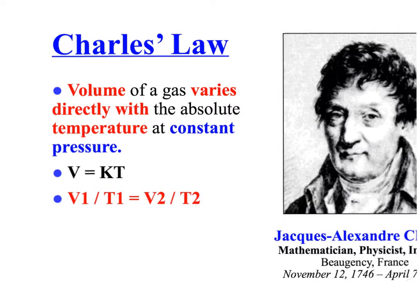The second gas law is Charles' Law. With Charles' Law, pressure is constant. The formula is V1 over T1 equals V2 over T2. Be aware that any equation involving temperature in the gas laws requires temperature to be in Kelvin. Many times temperature will be given in Celsius, and we will need to convert it. To do so: Kelvin equals Celsius plus 273.